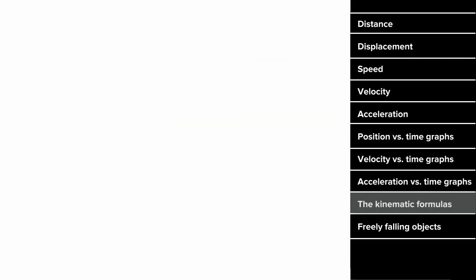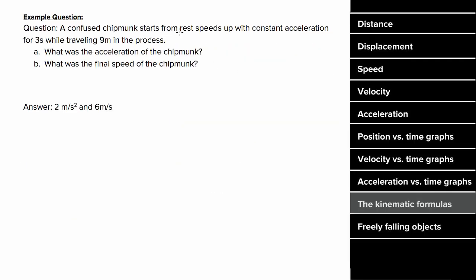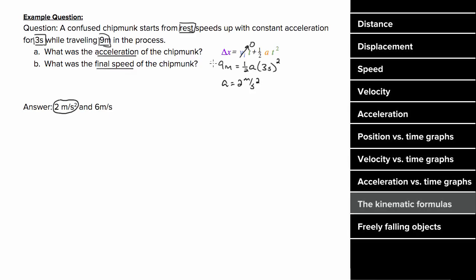What would an example problem involving kinematic formulas look like? A confused chipmunk started from rest and sped up with constant acceleration for three seconds, traveling nine meters. Using the second kinematic formula, the displacement is nine meters, the initial velocity is zero, the time is three seconds, and solving for acceleration gives two meters per second squared. Using the first kinematic formula, with initial velocity zero, acceleration two, and time three seconds, the final velocity is six meters per second.